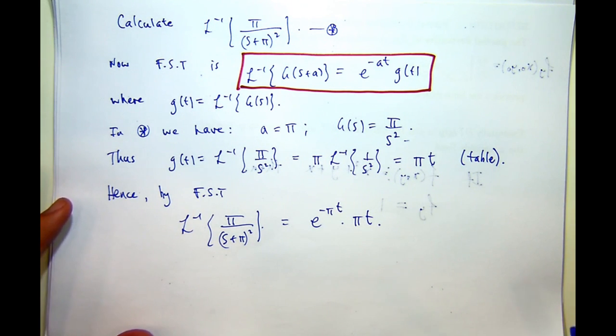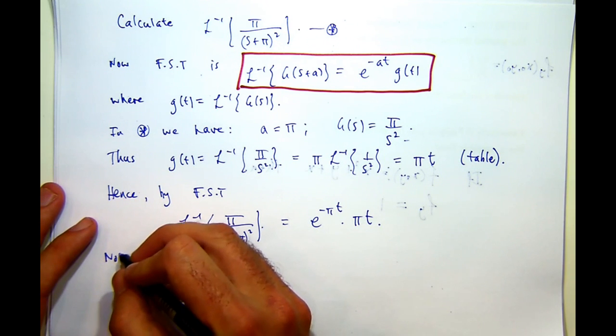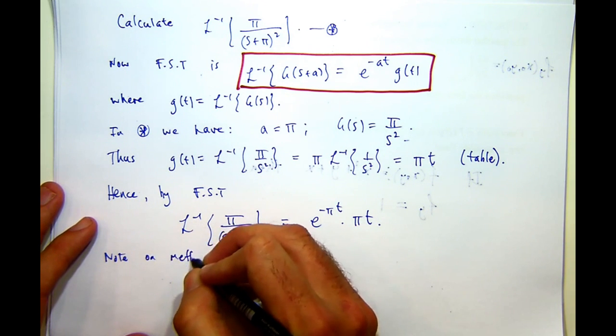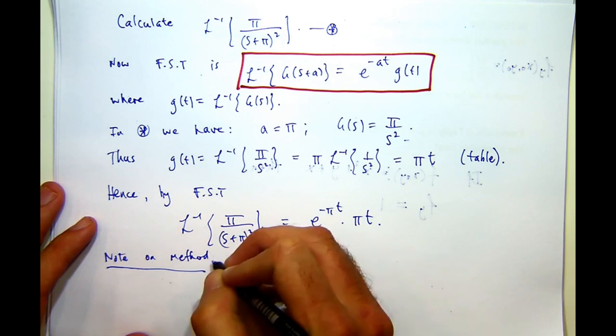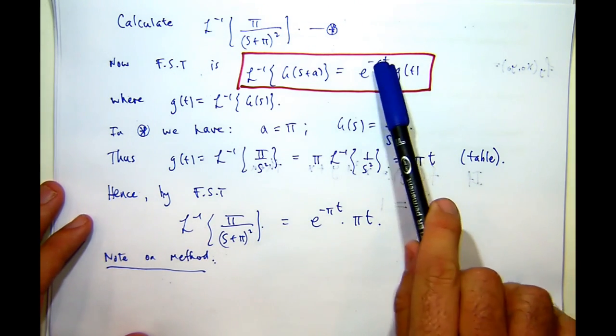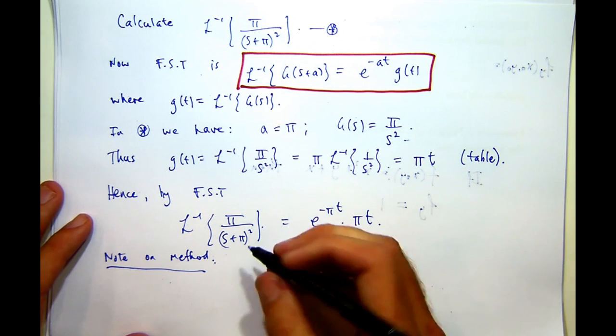So a little note on method. We identified A and big G.